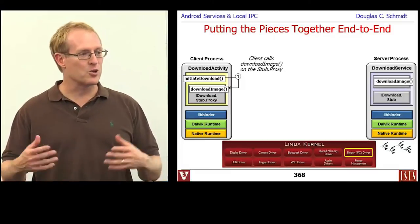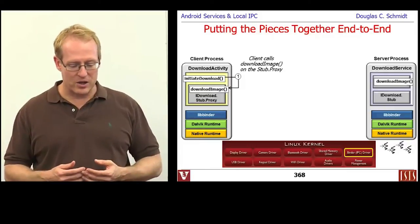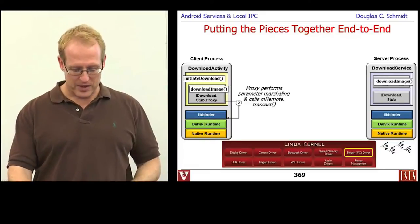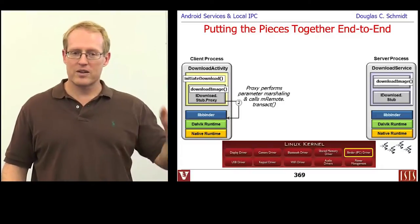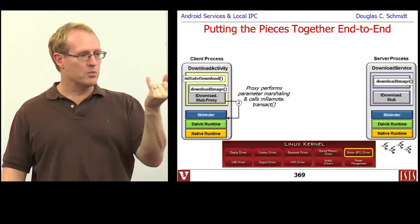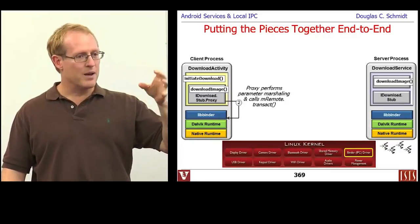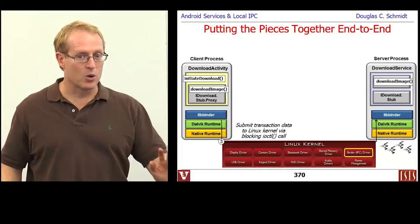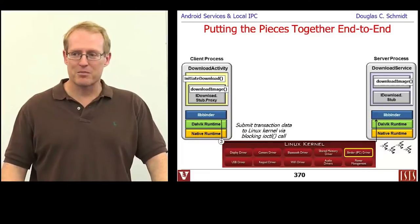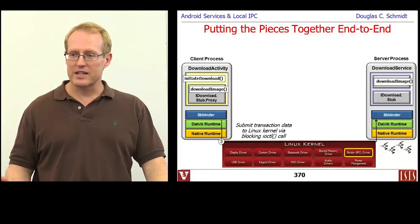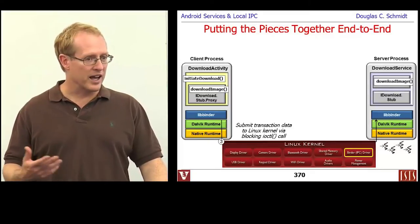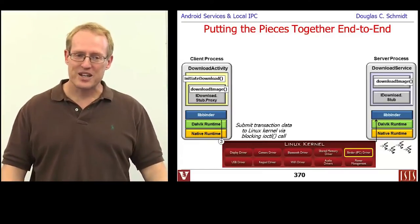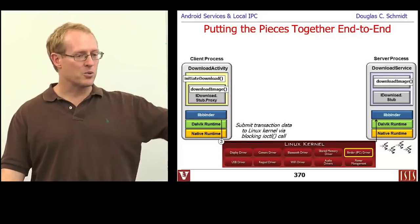Here we have a client that calls downloadImage on the stub.proxy. That converts the parameter and return result into parcels, which get passed to mRemote.transact. That takes the data and submits it via a lower-level mechanism — probably written in native code — that works atop the underlying Linux operating system. It uses an ioctl, which is a way of passing information to low-level device drivers. The low-level device driver in this case is the binder driver, which knows how to move data back and forth between sender and receiver.